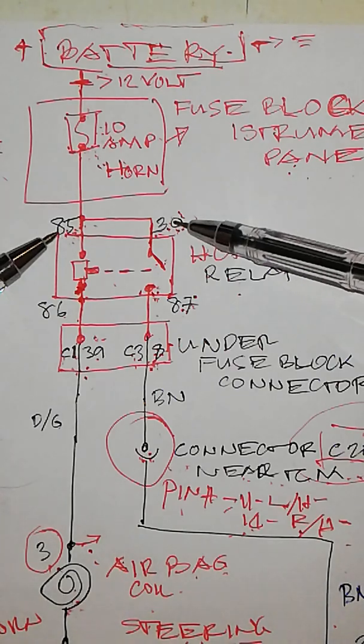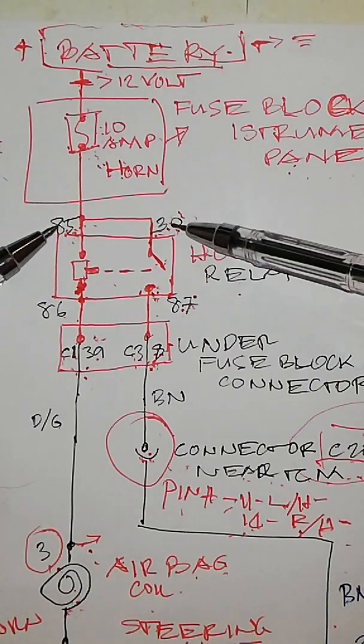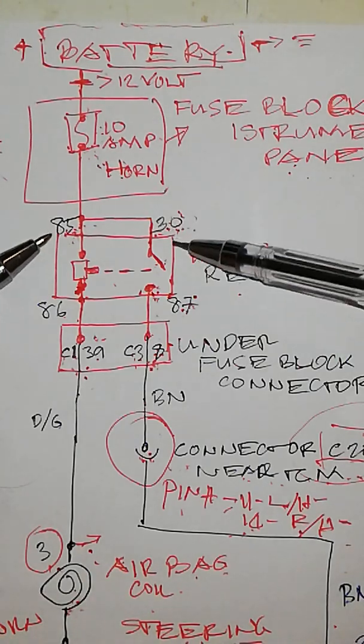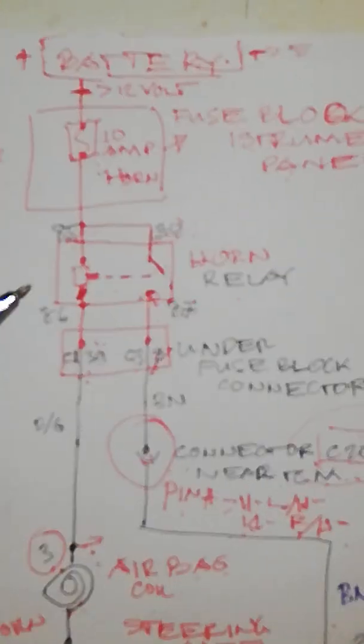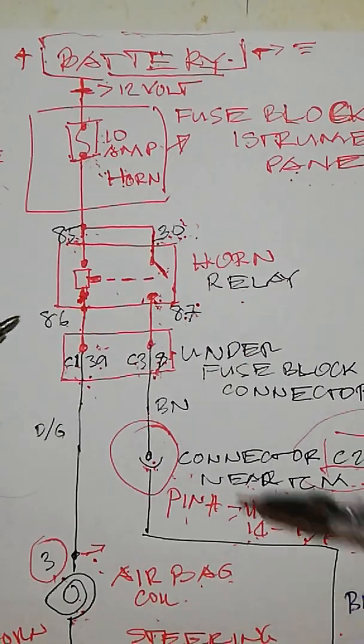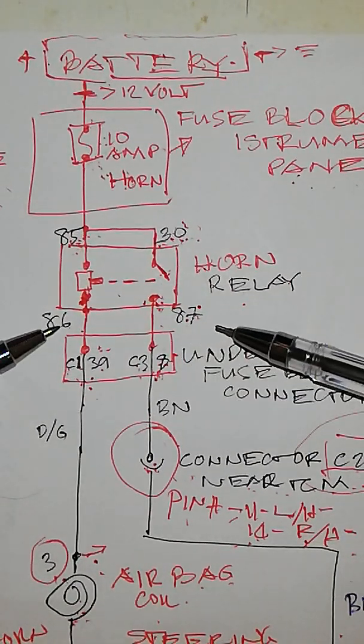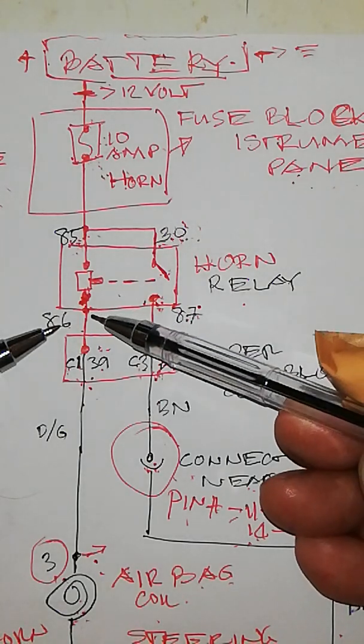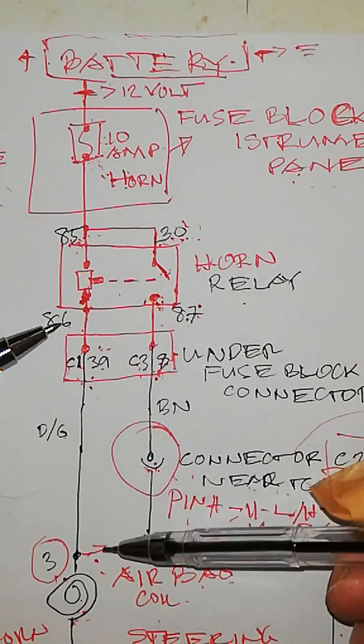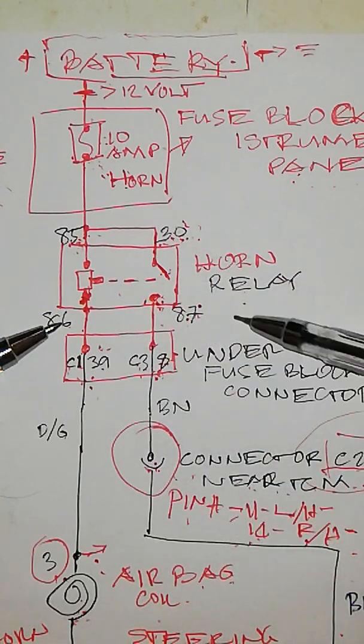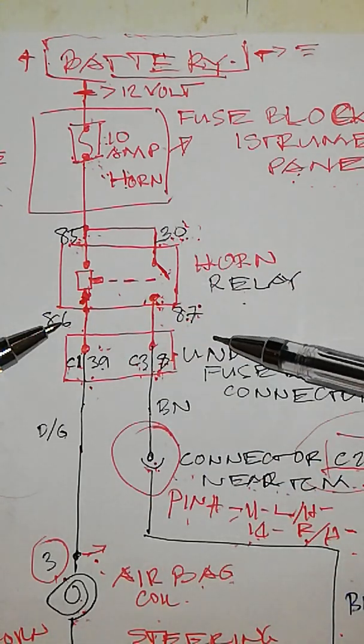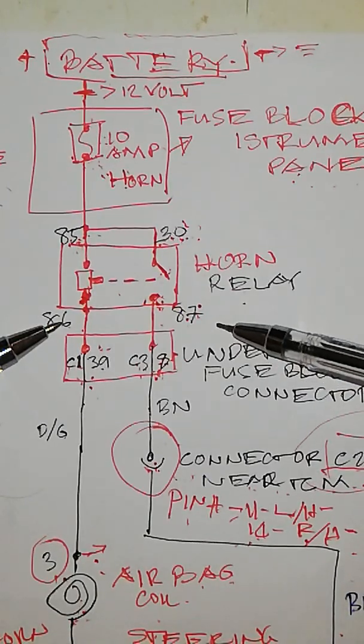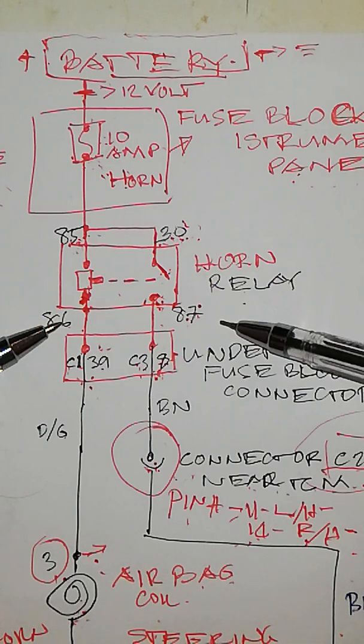If 30 and 85 is okay, proceed to another pin. This is pin 86 at your fuse box female connector. Use a multimeter, set your multimeter at continuity.